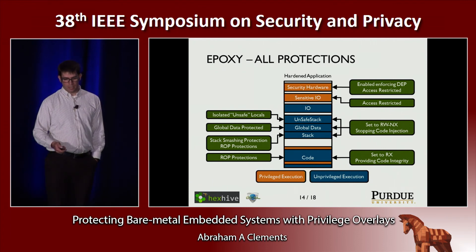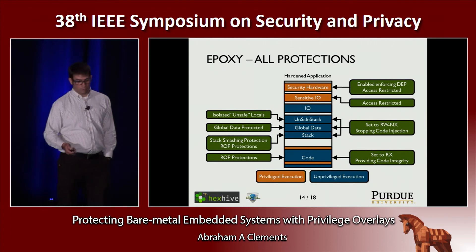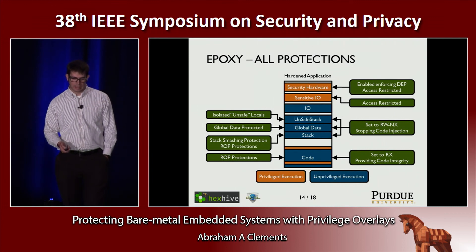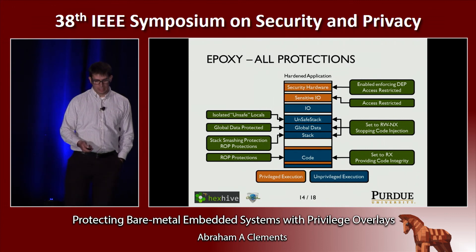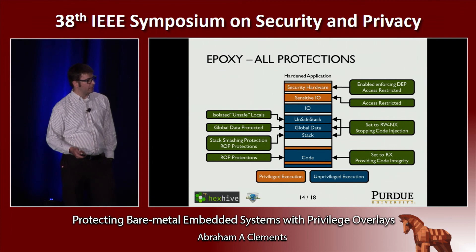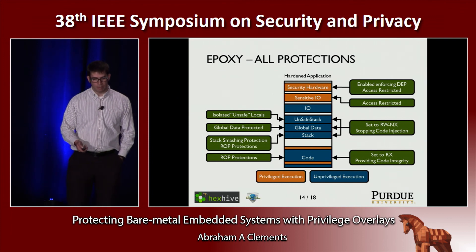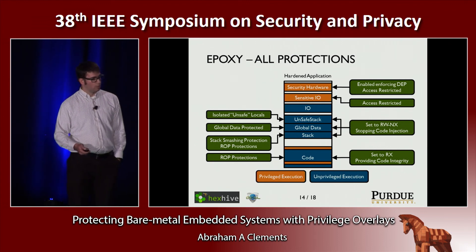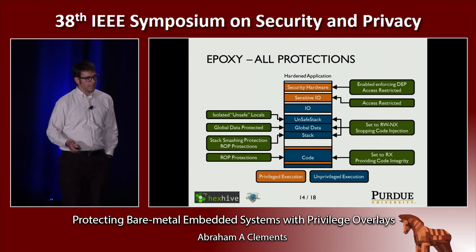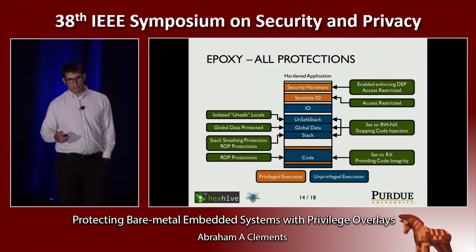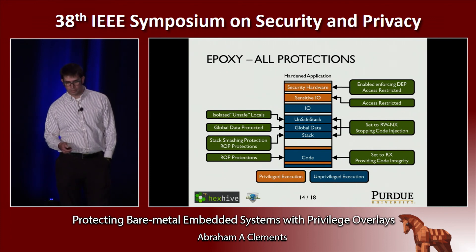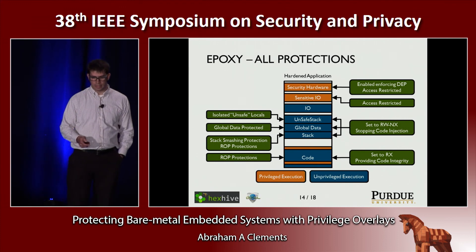After applying all of these defenses, we have isolated unsafe locals to their own separate stack, global data is protected, stack smashing has been prevented by SafeStack, and we have ROP protections from diversification. With all of these protections enabled, we have defenses against ROP, code injection, access to specific global variables, and access to sensitive I/O.